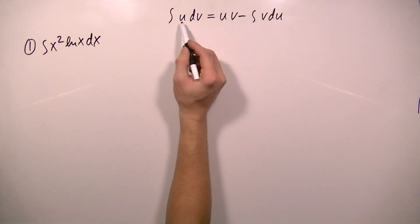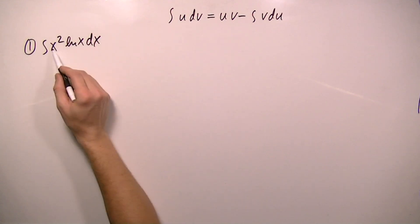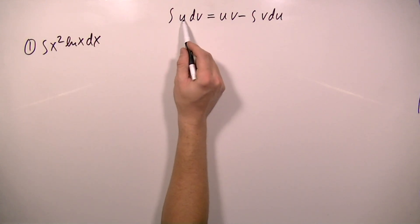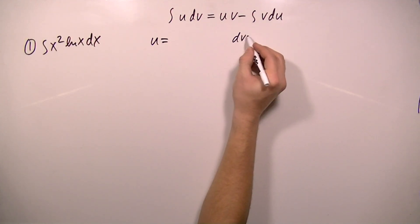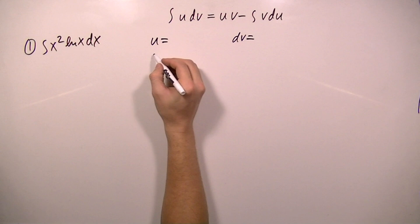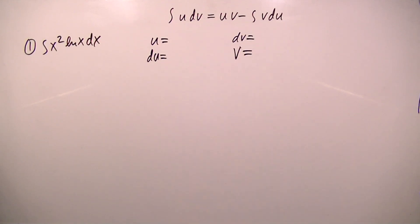When doing integration by parts, we need to decide which factor in our integral we want to be u and which factor we want to be dv. Then we're going to find the derivative of u and the integral of dv. Finding which factor to set equal to u and which to dv is usually the hardest part of integration by parts.